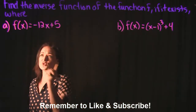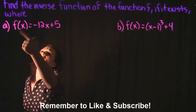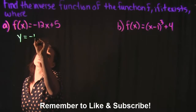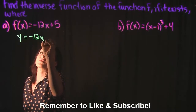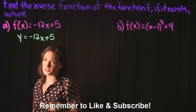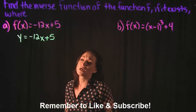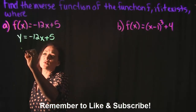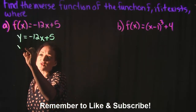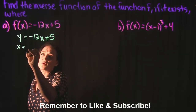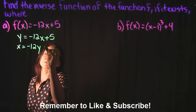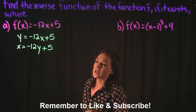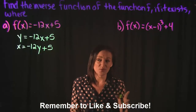Step one: instead of f of x, replace it with y — they mean the same thing, f of x is the same as y. Step two: switch x and y, so this y is now going to be an x, and this x over here is now going to be a y.